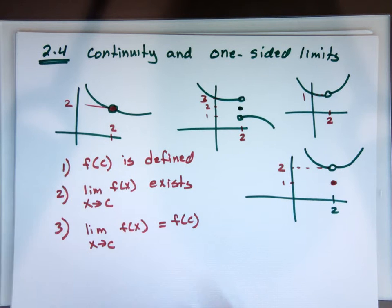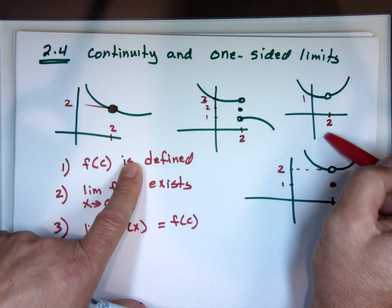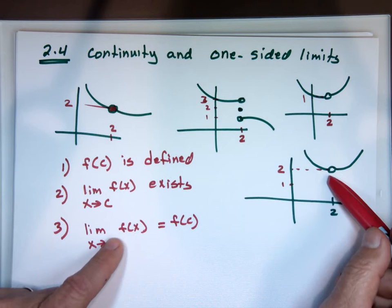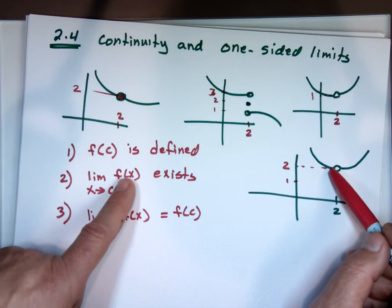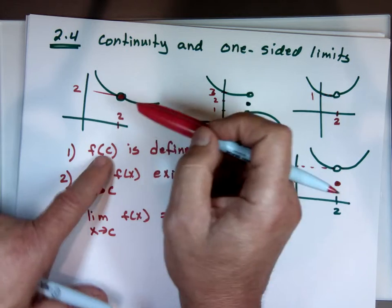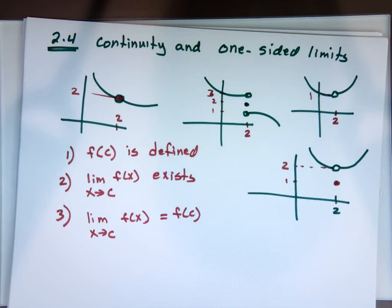Once one of these conditions fails, stop right there — it's not continuous at that point. For the first graph: the function is not defined at 2, stop, not continuous. For the second: the limit does not exist at 2, stop, not continuous. For the third: the function is defined at 2 and its value is 1, the limit is 2, but they're not equal — test number 3 fails, not continuous. For the fourth: the function is defined at 2, the limit exists, and the two numbers are equal — yes, it is continuous.